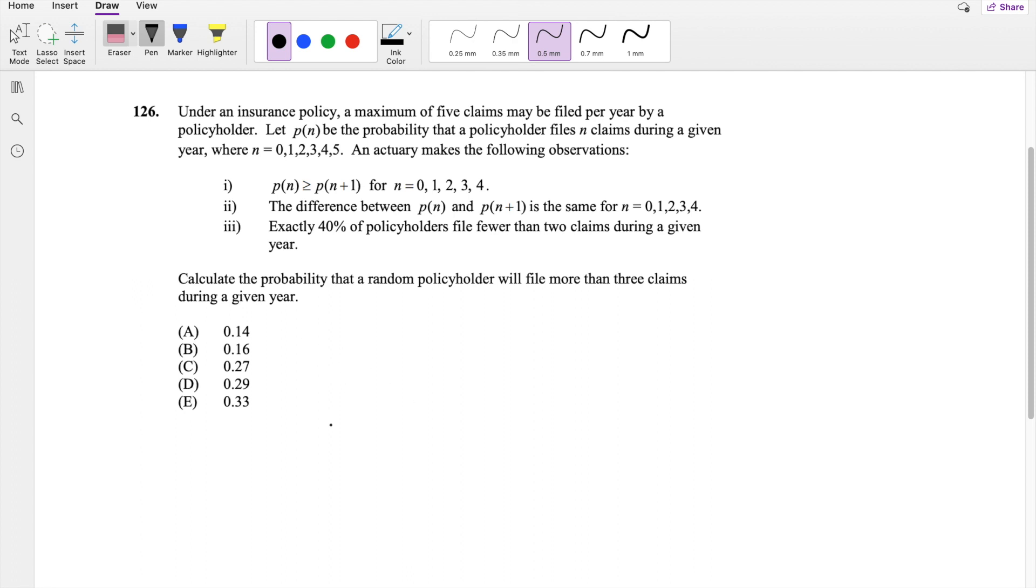So they're saying there is probability n equals 0, 1, 2, 3, 4, 5, so it's a discrete function. We know for any functions, all of them added together has to equal 1, so probability of 0 plus probability of 1 plus probability of 2 plus probability of 3 plus probability of 4 plus probability of 5 must equal 1.